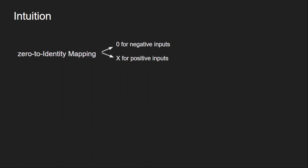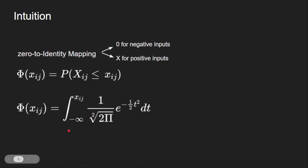We can define a function where for a specific input x_ij, the probability of preserving it equals the probability that any input x_ij is less than or equal to that particular input. For continuous distributions we take the integration from minus infinity to x_ij, summing all values under the density curve. This is the cumulative distribution function.